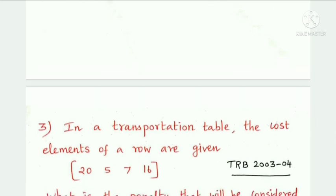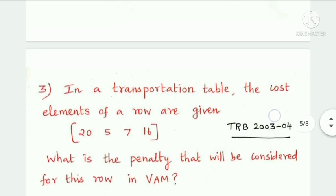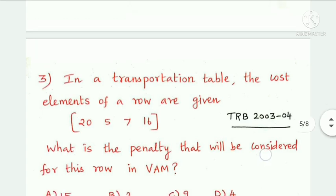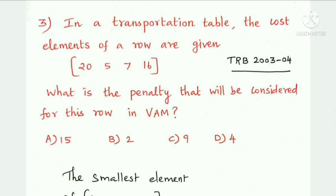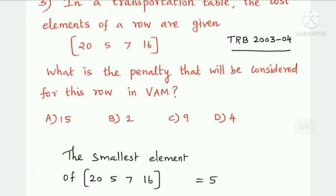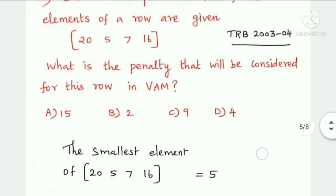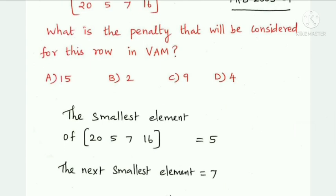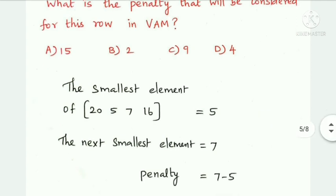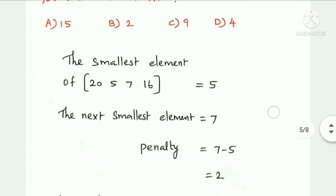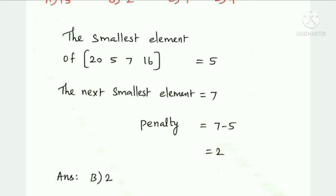Next question: in a transportation table, the cost elements of a row are given. What is the penalty considered for this row in VAM? VAM is the Vogel's Approximation Method for transportation problems. The penalty is the difference between the smallest and the next smallest element: 7 minus 5 = 2. Option B, the answer is 2.